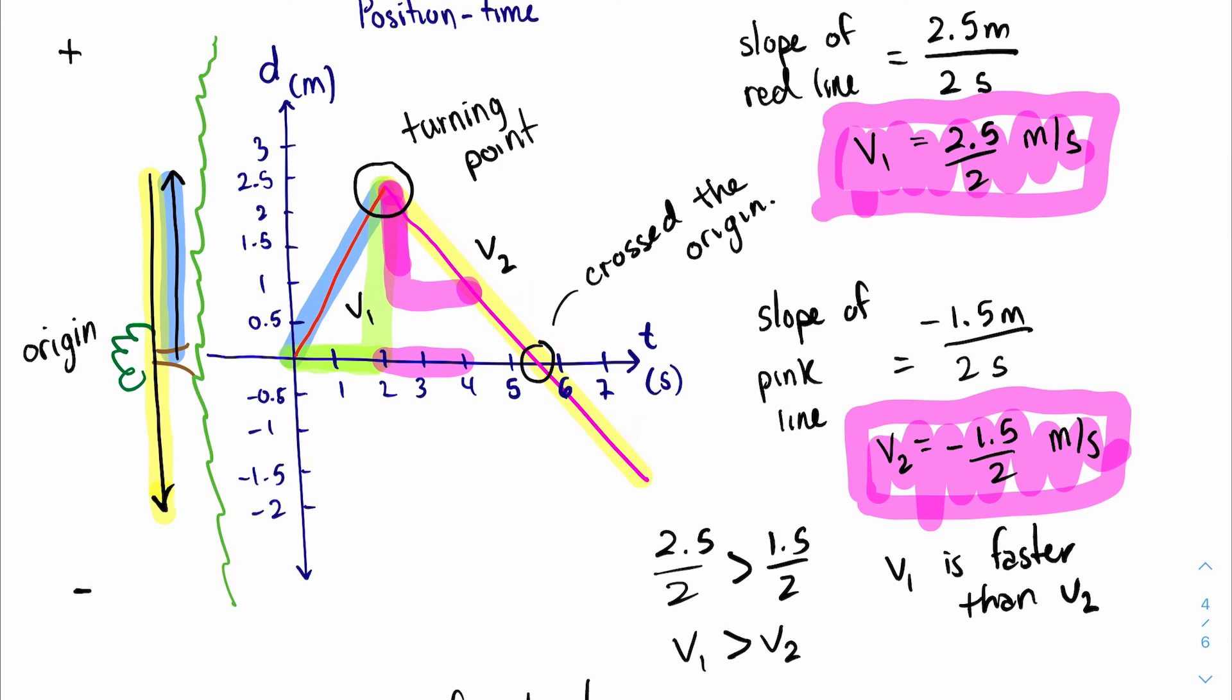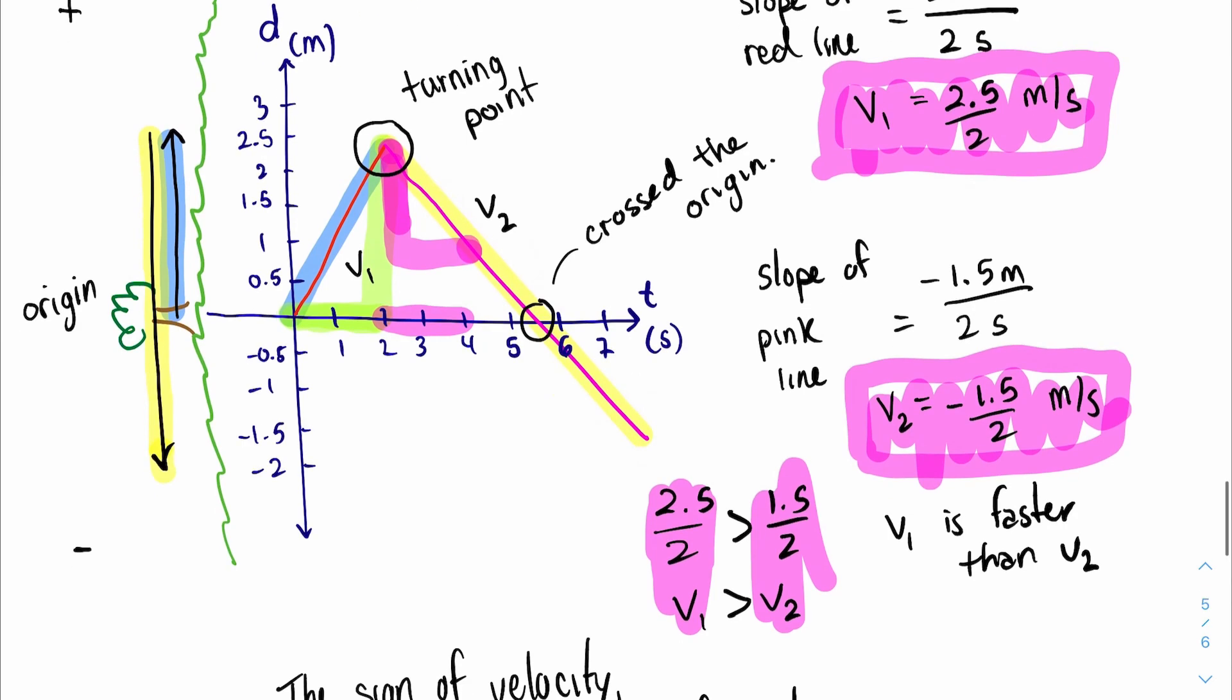And you just compare the steepness to determine which moves faster. So v1 moves faster than v2 because the slope was greater. So that's it for now, and I'm going to show you the next type of motion. So stay tuned.